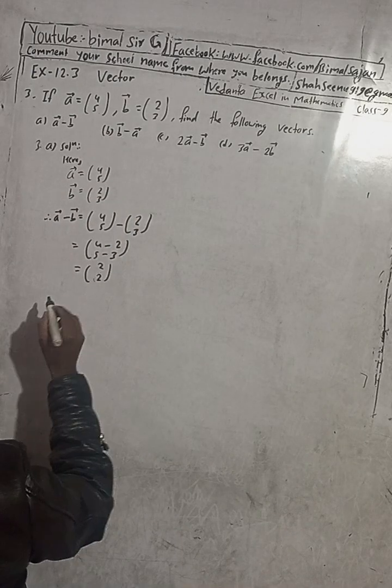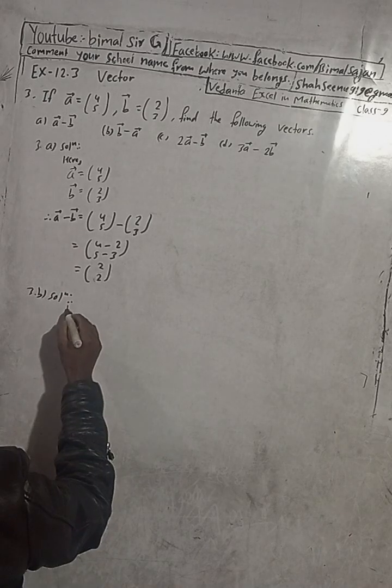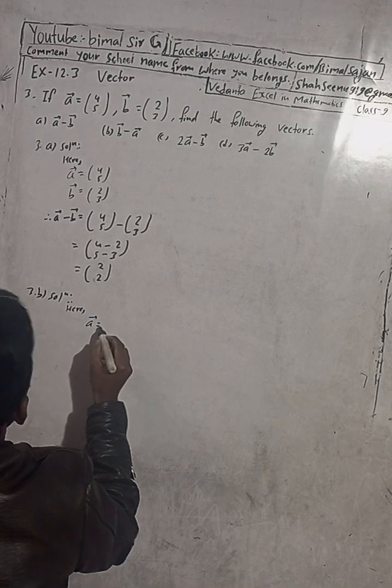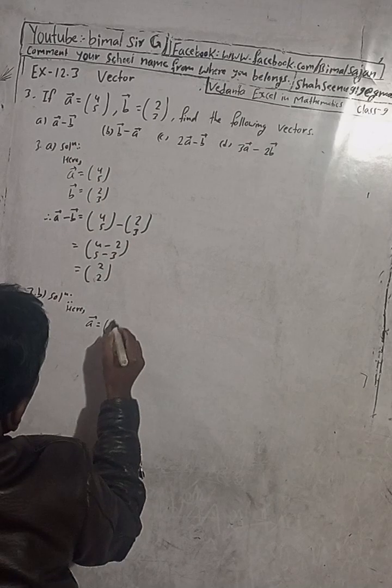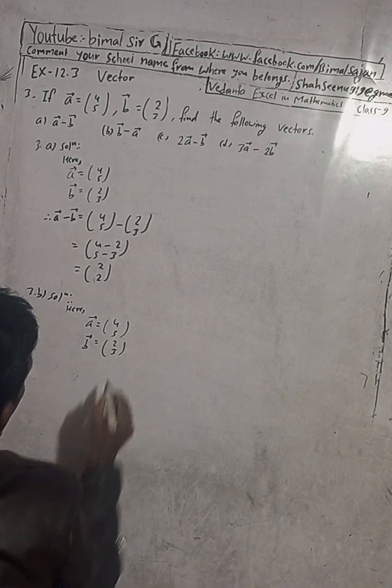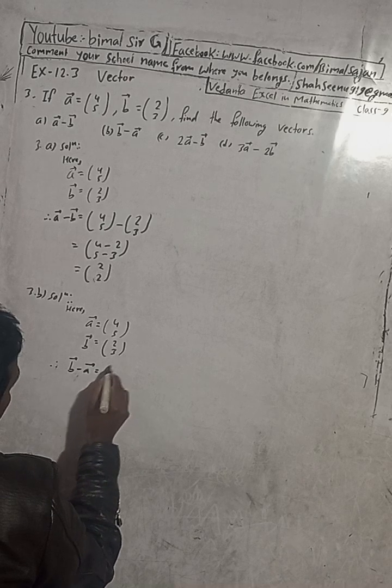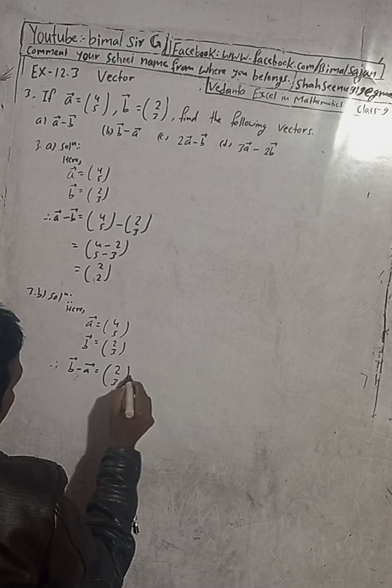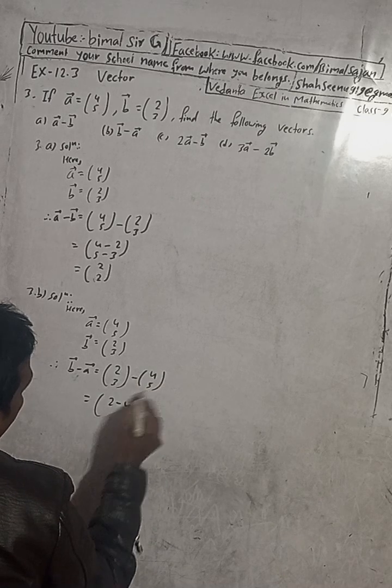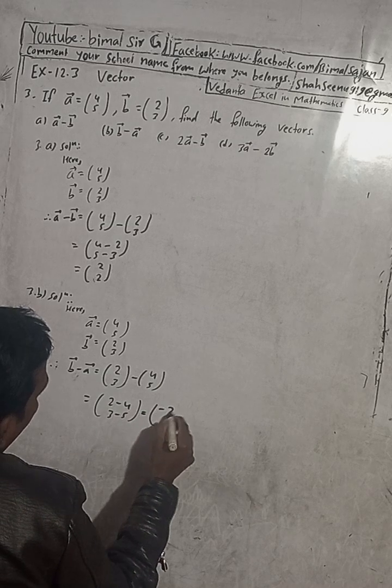Part B solution. Here again A vector is equal to (4,5), B vector is equal to (2,3). Therefore now B vector minus A vector is equal to (2,3) minus (4,5). And this is equal to 2 minus 4 and 3 minus 5. So this is equal to 2 minus 4 is minus 2 and 3 minus 5 is minus 2.